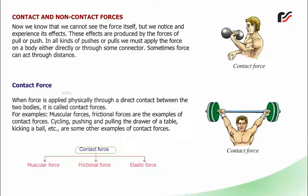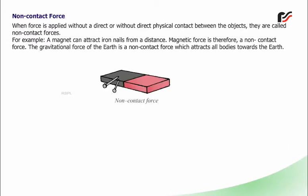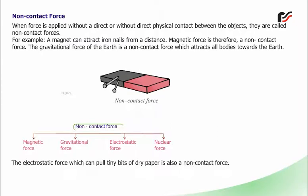For example, muscular forces and frictional forces are examples of contact forces. Cycling, pushing and pulling the drawer of a table, kicking a ball, etc. are some other examples of contact forces. Non-contact force: When force is applied without direct physical contact between the objects, they are called non-contact forces. For example, a magnet can attract iron nails from a distance. Magnetic force is therefore a non-contact force. The gravitational force of the earth is a non-contact force which attracts all bodies towards the earth. The electrostatic force which can pull tiny bits of dry paper is also a non-contact force.